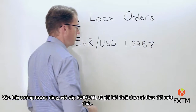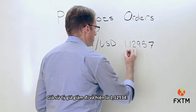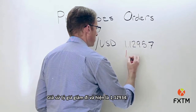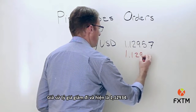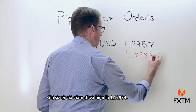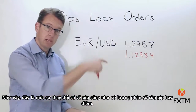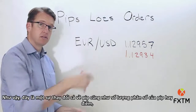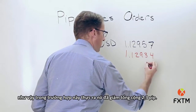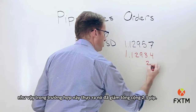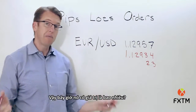Let's imagine that the euro/US dollar exchange rate drops in value and is currently 1.12934. This represents a change both in pips as well as a fractional amount of pips, or points. In this case it has actually fallen by 2.3 pips in total.